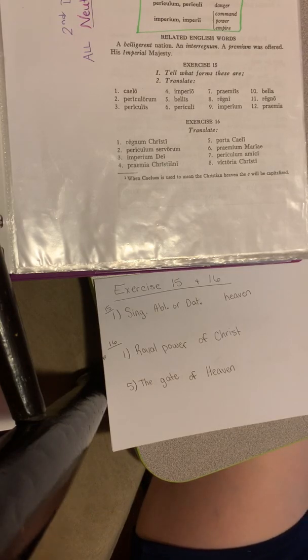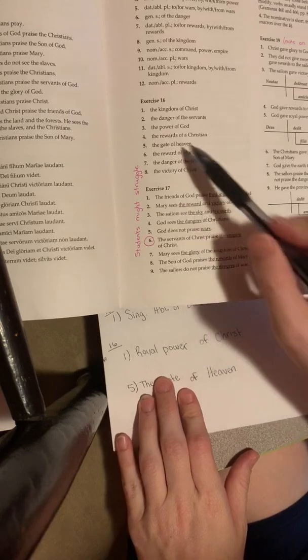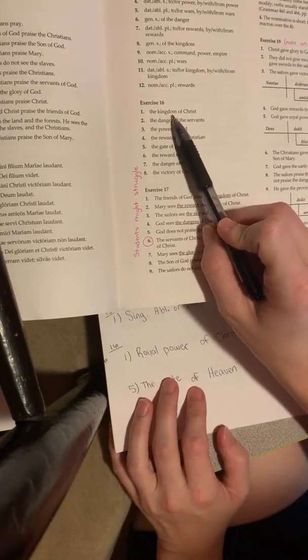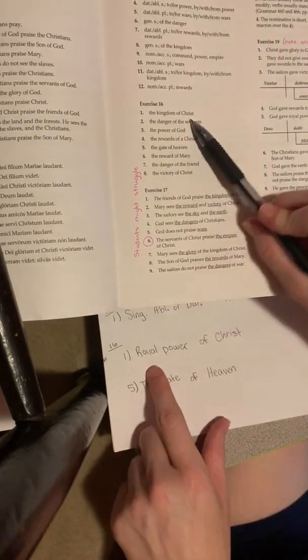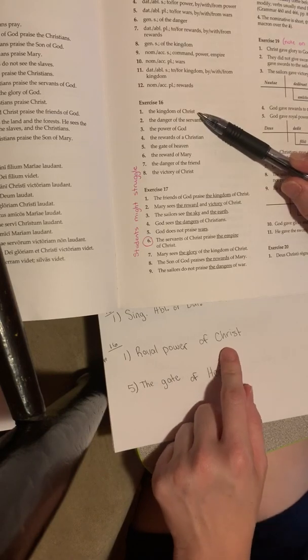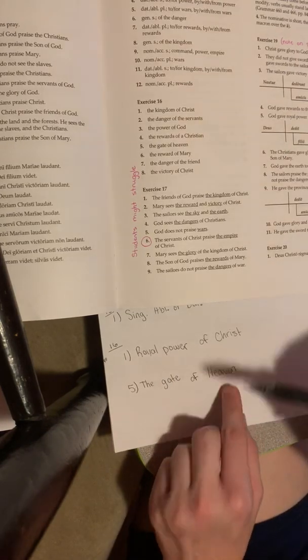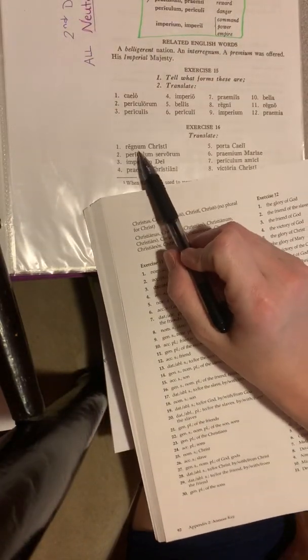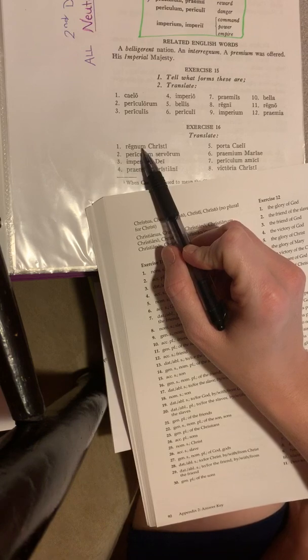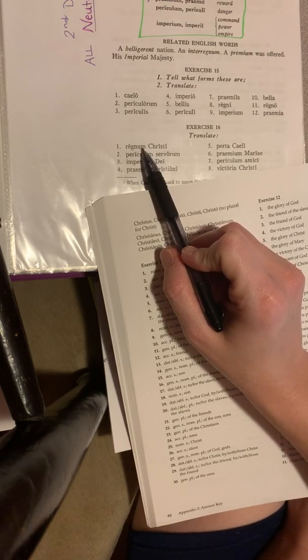Let's check our work. One. The kingdom of Christ. Well, I put royal power of Christ. But I'm not wrong. Because, sorry, I lost my place here. Regulum can be translated as royal power or kingdom.